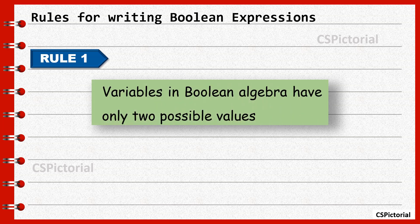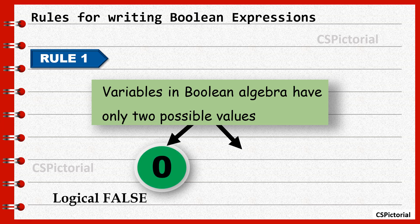The first rule is that variables in Boolean algebra can have only two possible values. 0 denotes false and 1 denotes true.